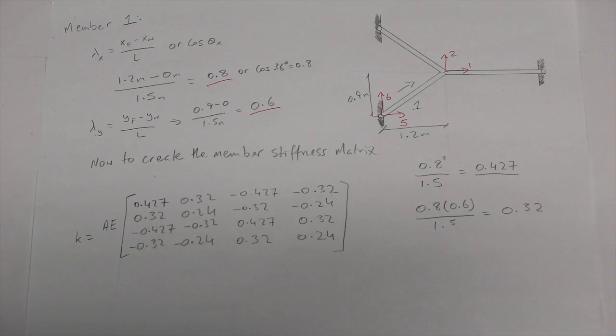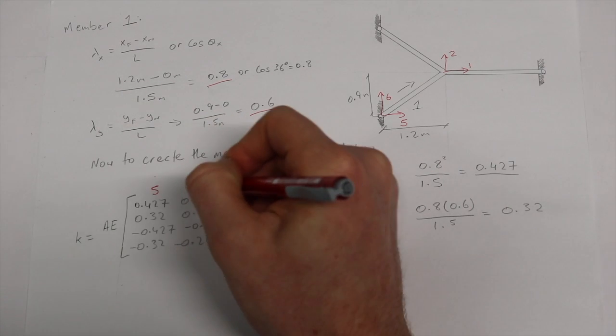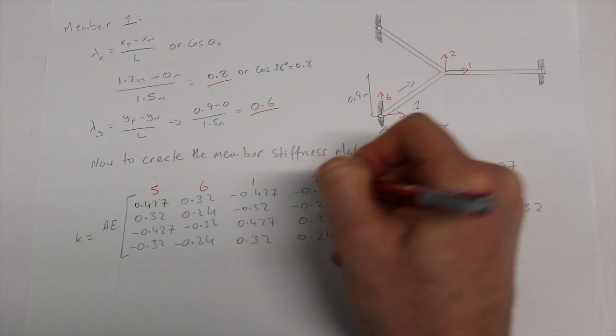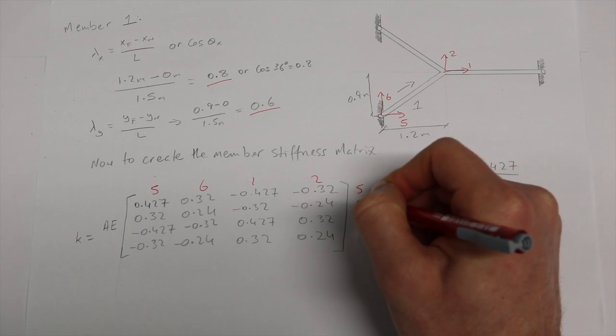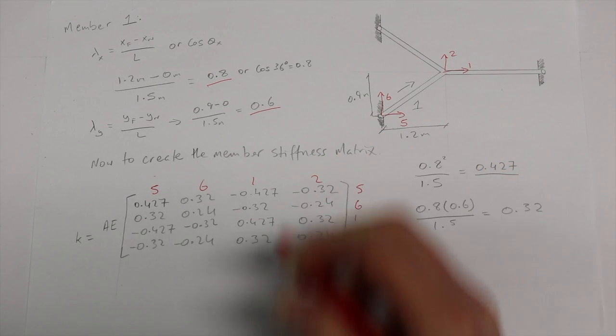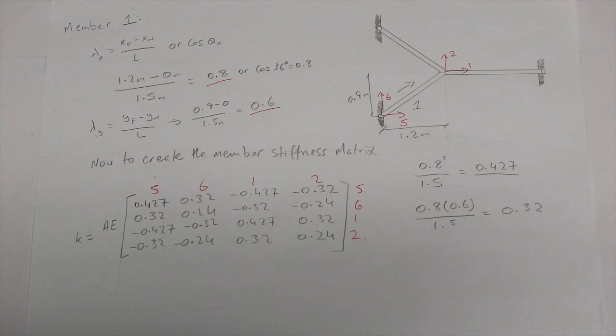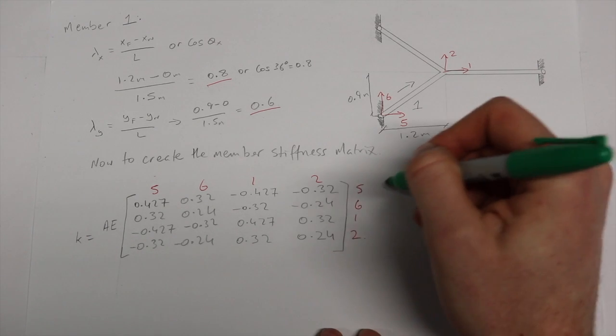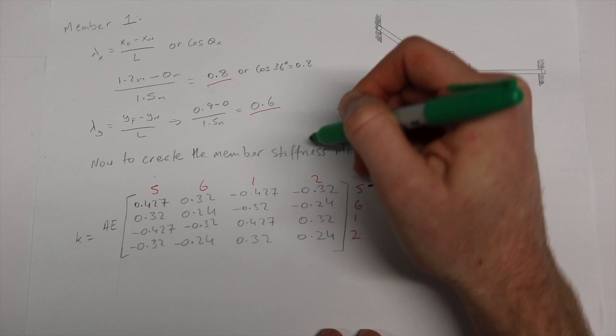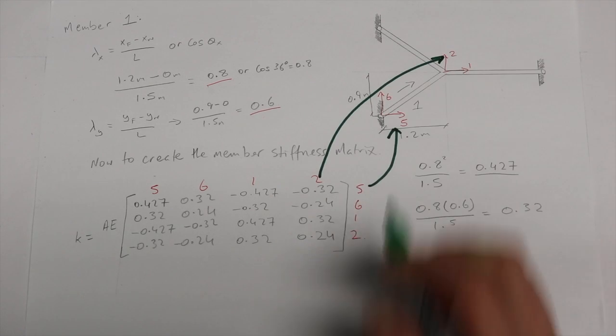Then labeling the degrees of freedom near x, near y, far x, and far y as 5, 6, 1, and 2. This labeling will be useful when creating the structure stiffness matrix, as we can see the degrees of freedom correspond directly to the labeled degrees of freedom in the diagram.